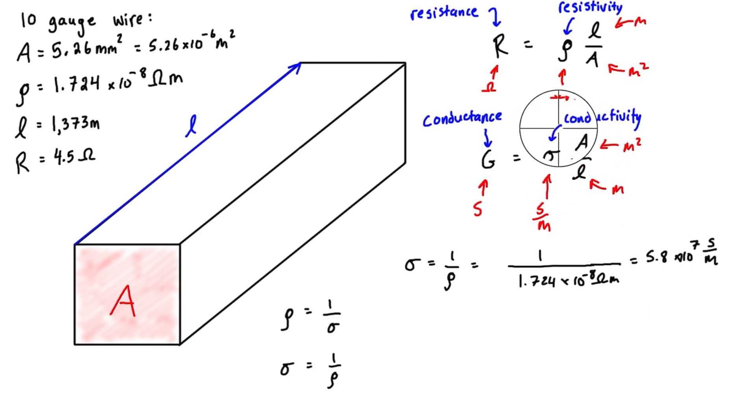We can take this value of conductivity and plug it into the expression for conductance. The overall conductance equals 5.8 times 10 to the 7 Siemens per meter times 5.26 times 10 to the negative 6 meters squared for the cross-sectional area, divided by 1373 meters for the length.